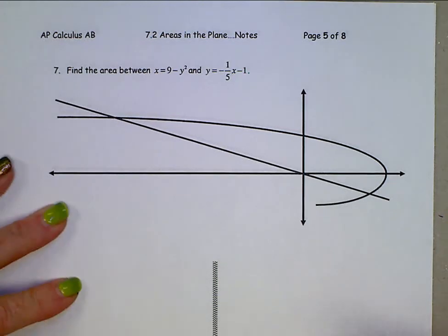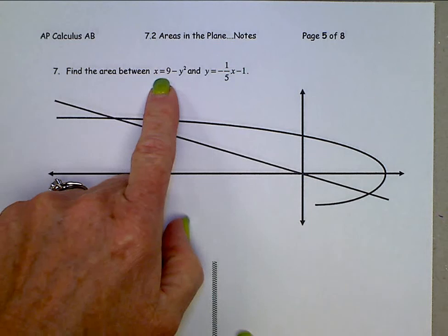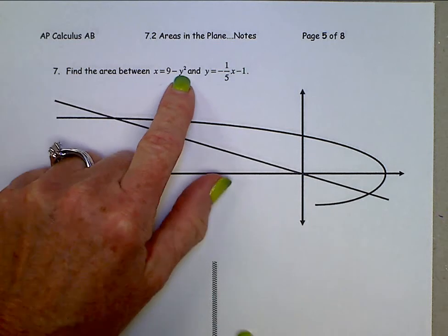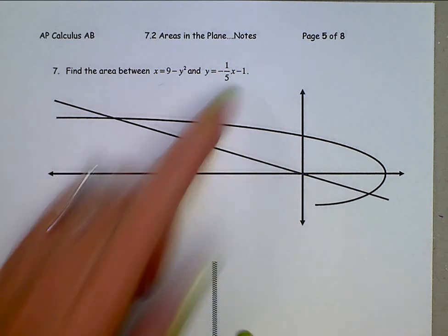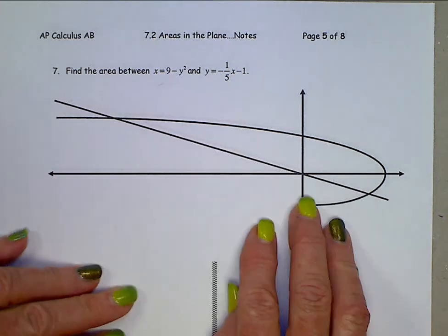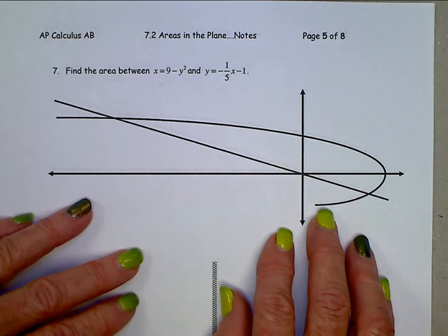Alright, we are finding the area between x equals 9 minus y squared and y equals negative one-fifth x minus 1. I put the graphs up here, but we do need to identify the different pieces.